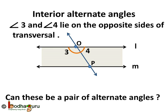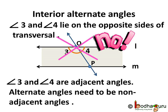Now, you may think: why are angles 3 and 4 not a pair of interior alternate angles? Yes, they are interior angles and they also lie on the opposite sides of the transversal. But if you see, they are adjacent angles, as both of these have a common arm. So angle 3 and angle 4 cannot be alternate angles, even if they lie on the opposite side of the transversal. Remember, alternate angles are always non-adjacent angles.